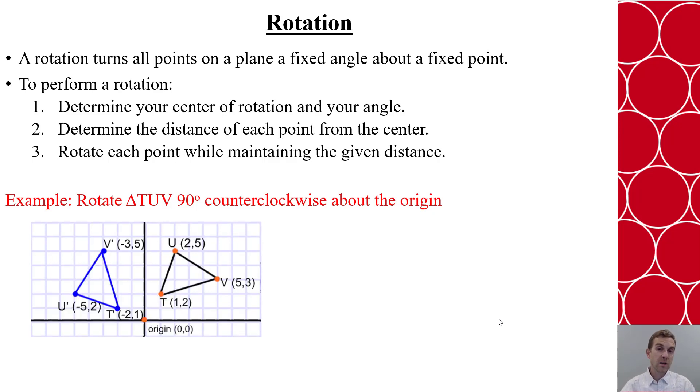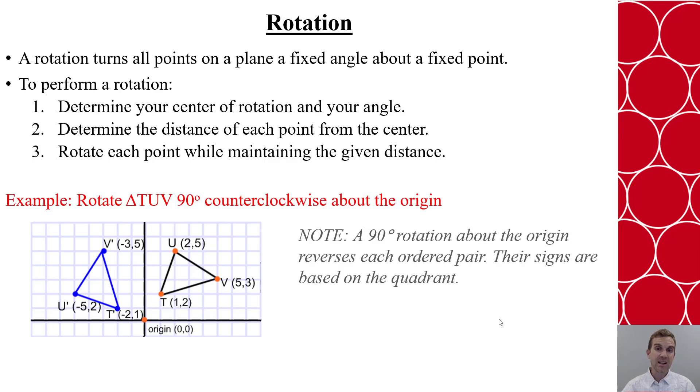One of the nice things about working in the coordinate plane where we rotate about the origin is that a 90 degree rotation will always reverse those ordered pairs. And then we pay attention to the signs based on the quadrant. Here we rotate it into the second quadrant so all the X values became negative.